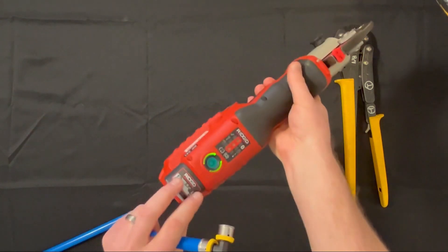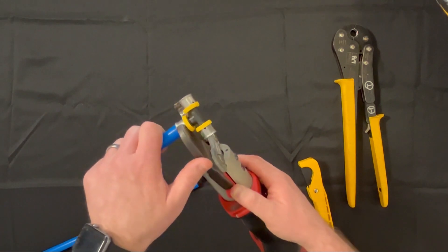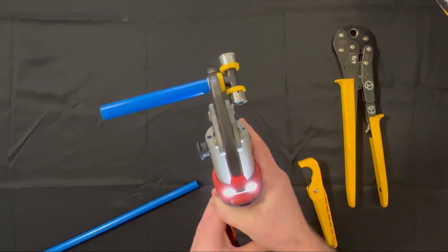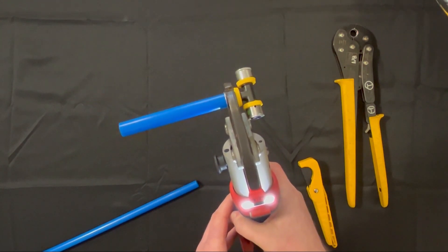First, ensure that the tool is on. Open the jaws. Place the jaws perpendicular over the sleeve up against the tool locator ring to ensure proper positioning. We will then squeeze the trigger until the press is complete.